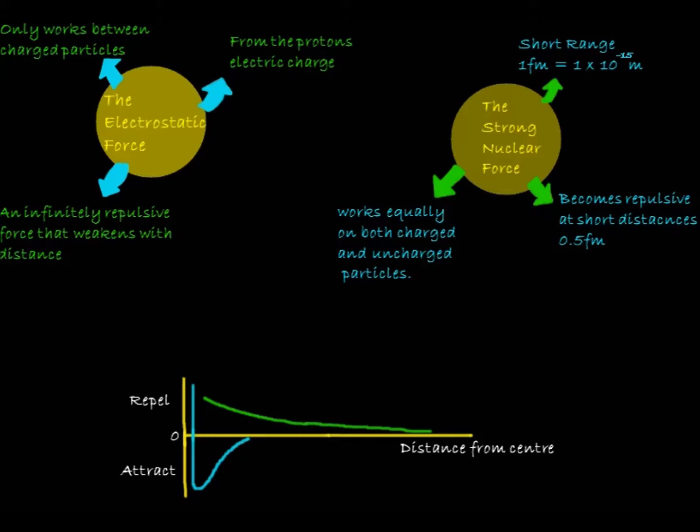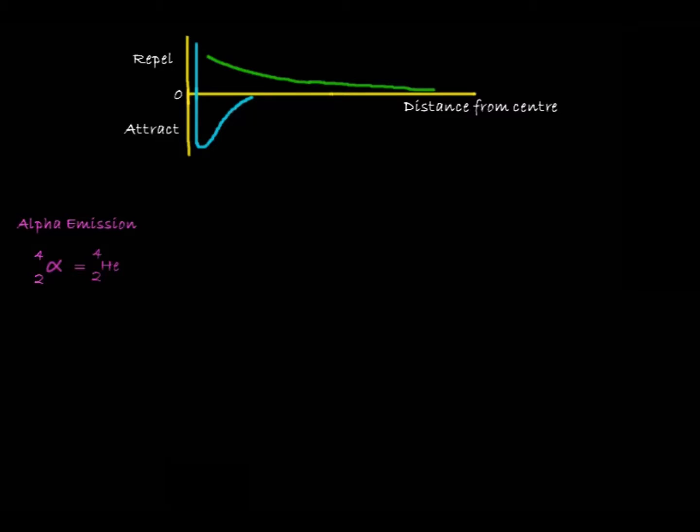Now we've finished with the stable nuclei, let's talk about the unstable stuff. In GCSE, we learned that unstable nuclei emit radiation, and this radiation is alpha, beta, and gamma. The emission of radiation is a quest for stability.